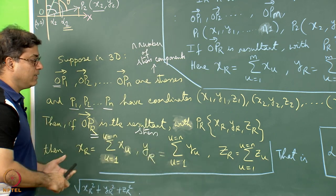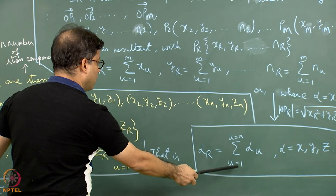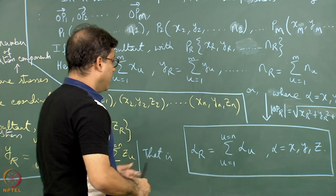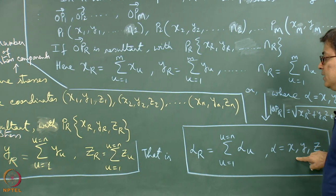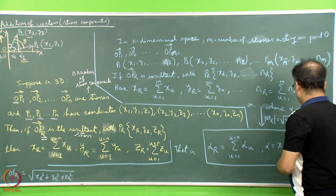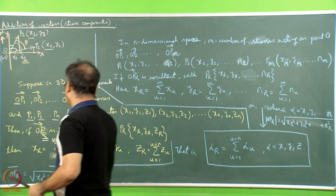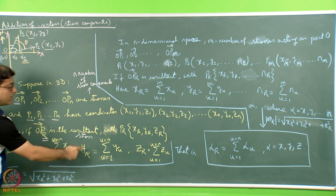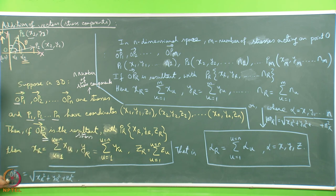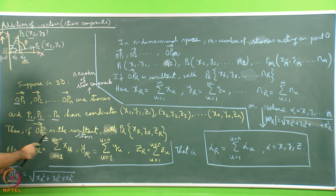These three equations can be represented in a single compressed form: alpha_r equals the sum of alpha_u for u = 1 to n, where alpha stands for x, y, or z respectively. Once xr, yr, and zr are understood, the magnitude of the stress OPr is obtained as the square root of xr squared plus yr squared plus zr squared.